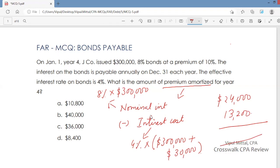And the difference of these two is premium amortized. So, this is premium amortized. So, what is the amount of premium amortized for year 4? $10,800. This is the answer. And this is how you calculate this.